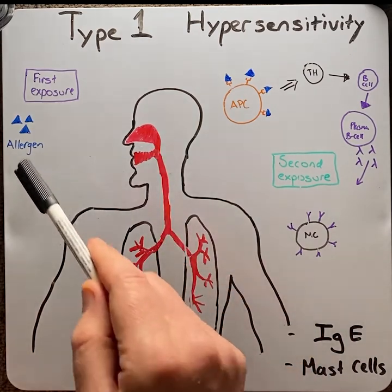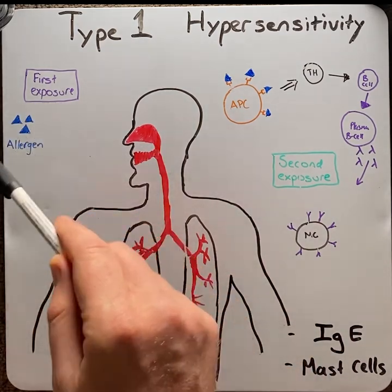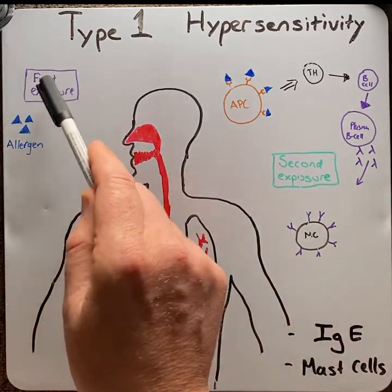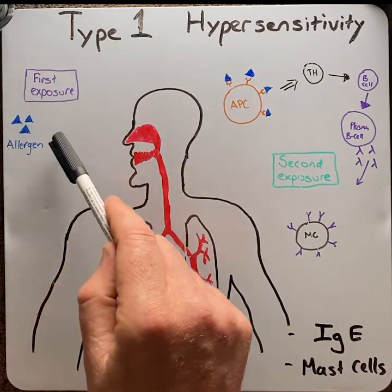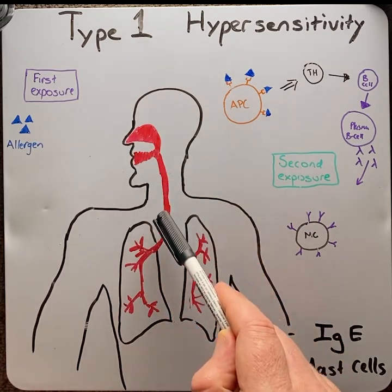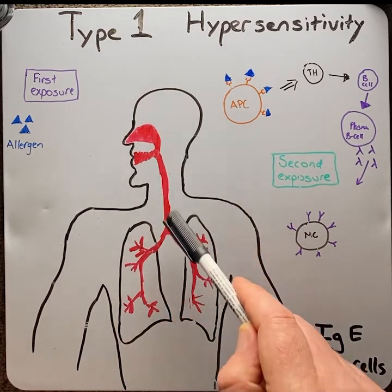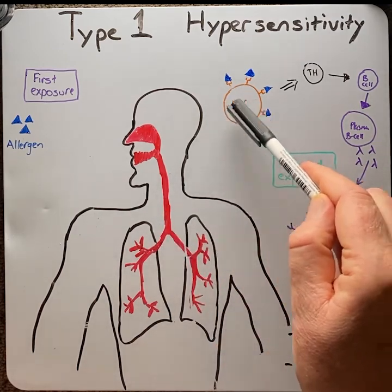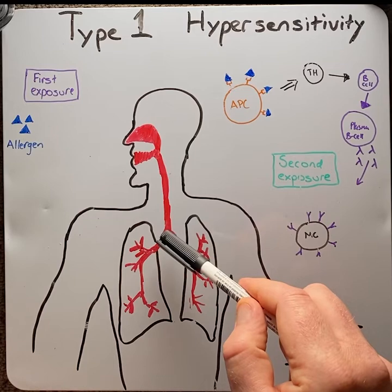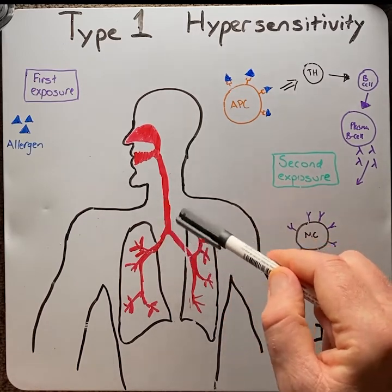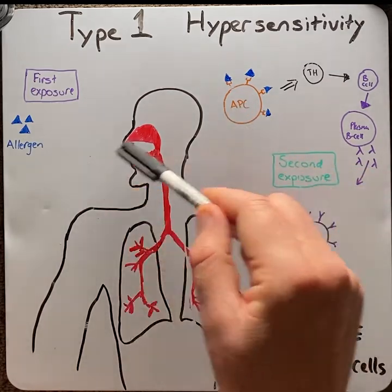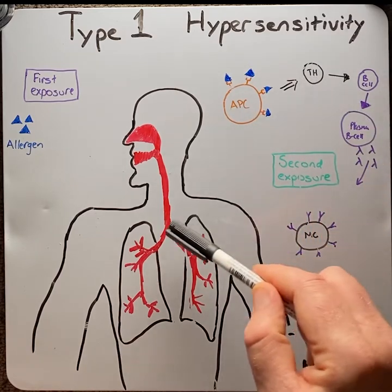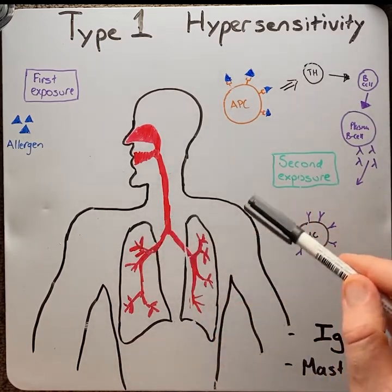For this example, we use pollen as the allergen and the airway as the location. On first exposure, the allergen is breathed in through the nose or mouth and goes down the airway. Along the airway, we have macrophages or dendritic cells — antigen-presenting cells — which phagocytose and engulf the pollen, then present it to T helper cells at local neighboring lymph nodes.